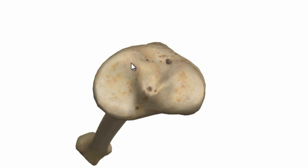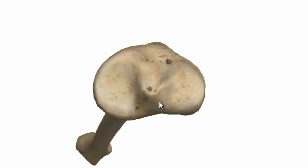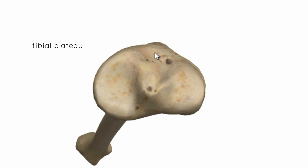We're looking at the superior surface of the medial condyle and the superior surface of the lateral tibial condyle. In between these two condyles is the intercondylar region, which is important because the menisci of the knee joint attach here, as do the anterior and posterior cruciate ligaments. This whole superior surface is referred to as the tibial plateau — it consists of the articular surfaces of the tibial condyles and the intercondylar region.